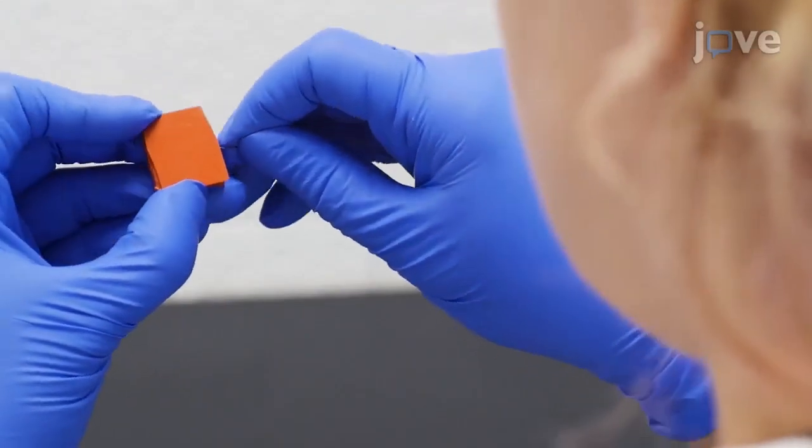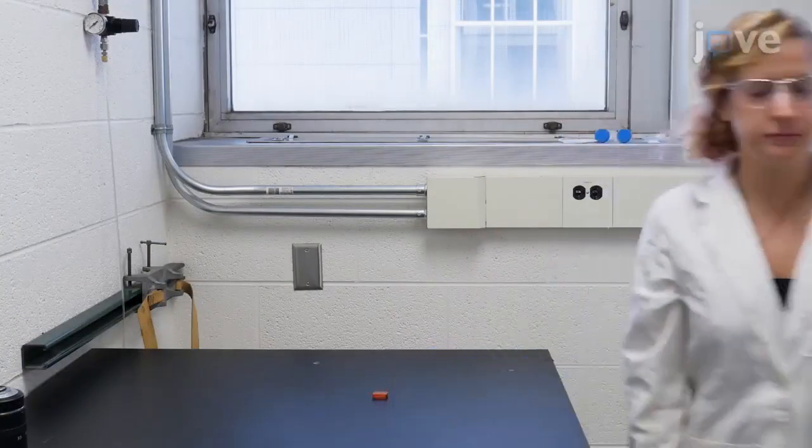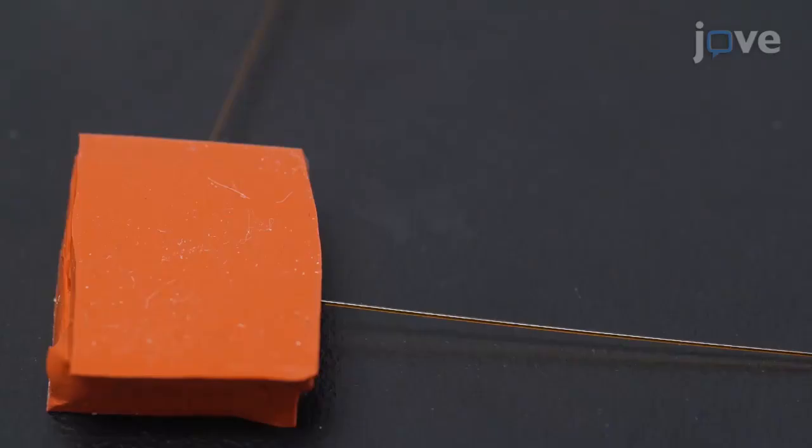Seal both ends of the capillary with silica rubber. After incubating at room temperature for at least 24 hours, continue with the linear polyacrylamide coating on the inner wall of the separation capillary as described in the text protocol.